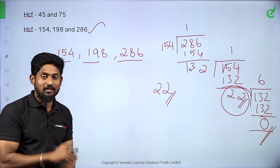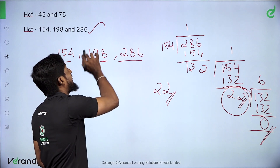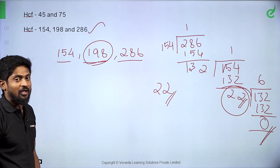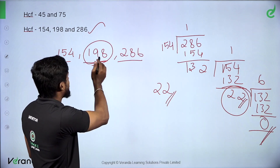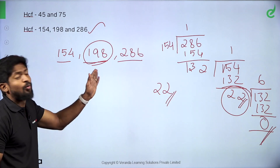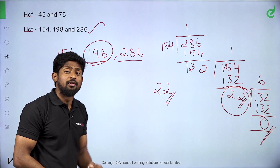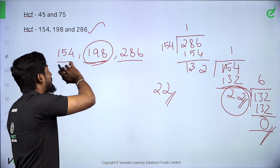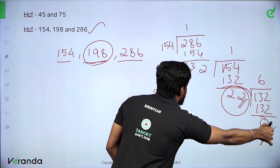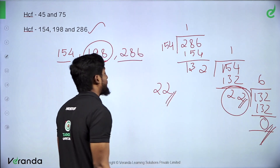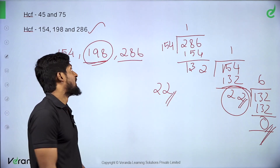When we get 3 or 4 numbers, we find HCF step by step. Notice that 154, 198, and 286 are all even numbers — ending in 2, 8, and 6. So they can all be divided by 2. If you divide by any number and the remainder is 0, that number is a valid HCF. In the normal division method, we can find HCF this way.